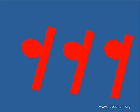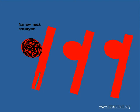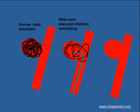Depending on the relationship between the aneurysm and the main artery, an aneurysm could have a narrow or a wide neck. In a narrow neck aneurysm, a catheter is taken from a blood vessel in the leg into the aneurysm, and the aneurysm is packed with multiple thin platinum coils, obliterating the sac completely.